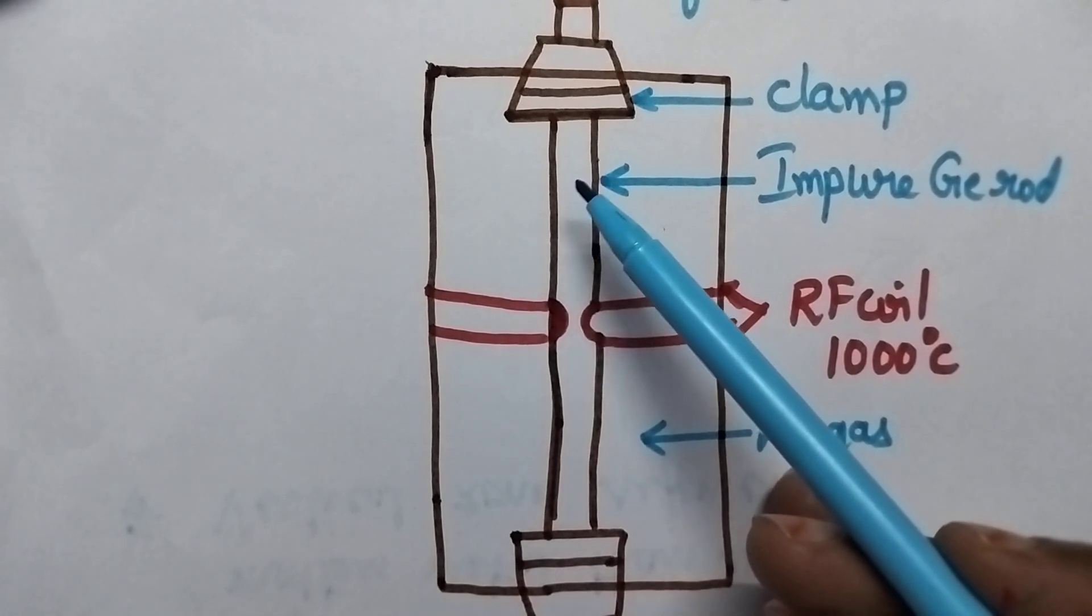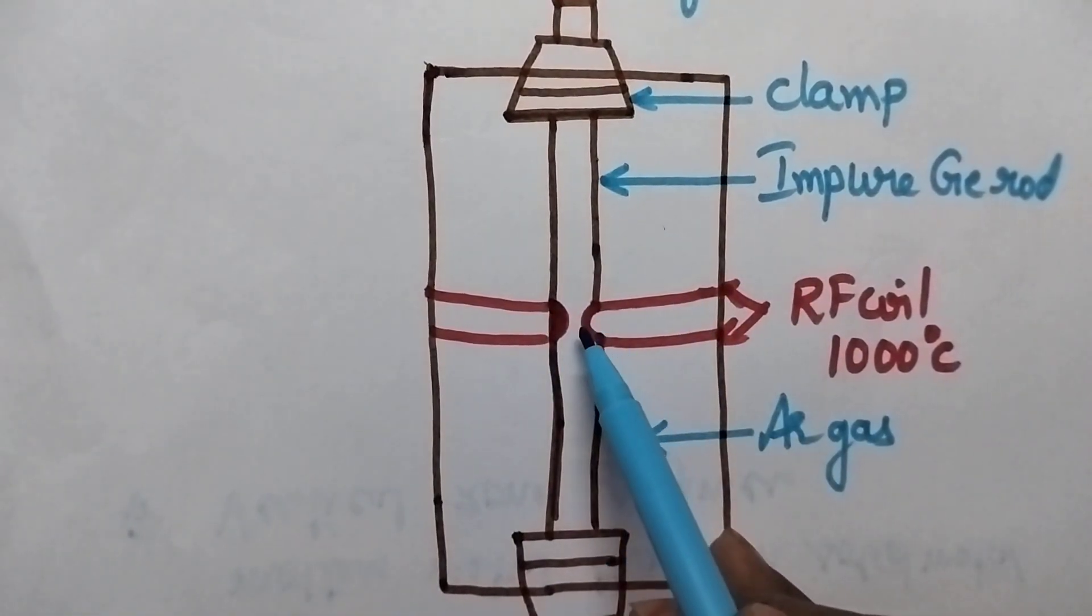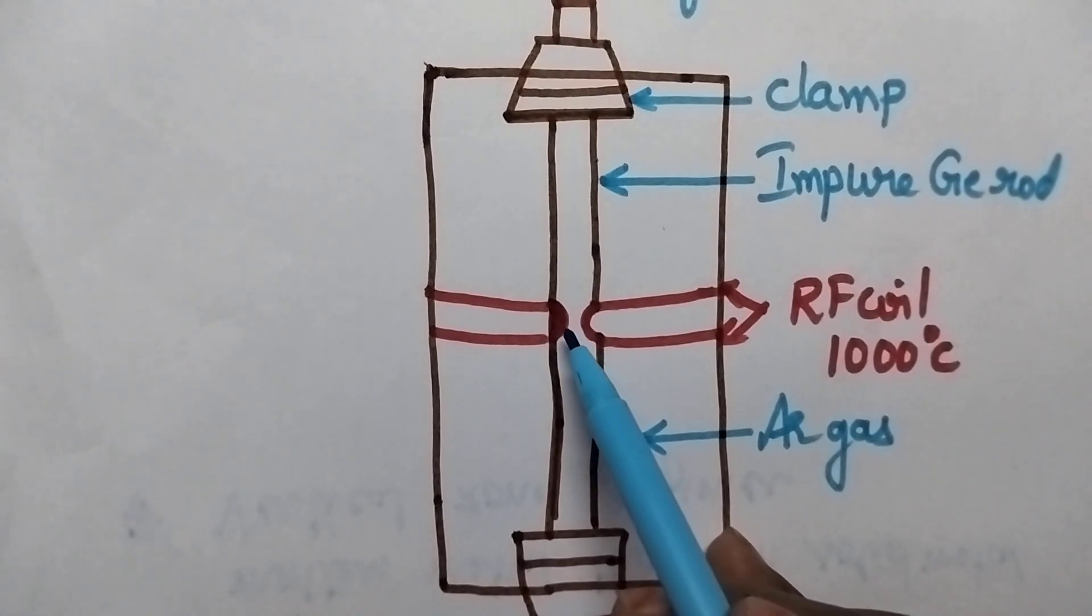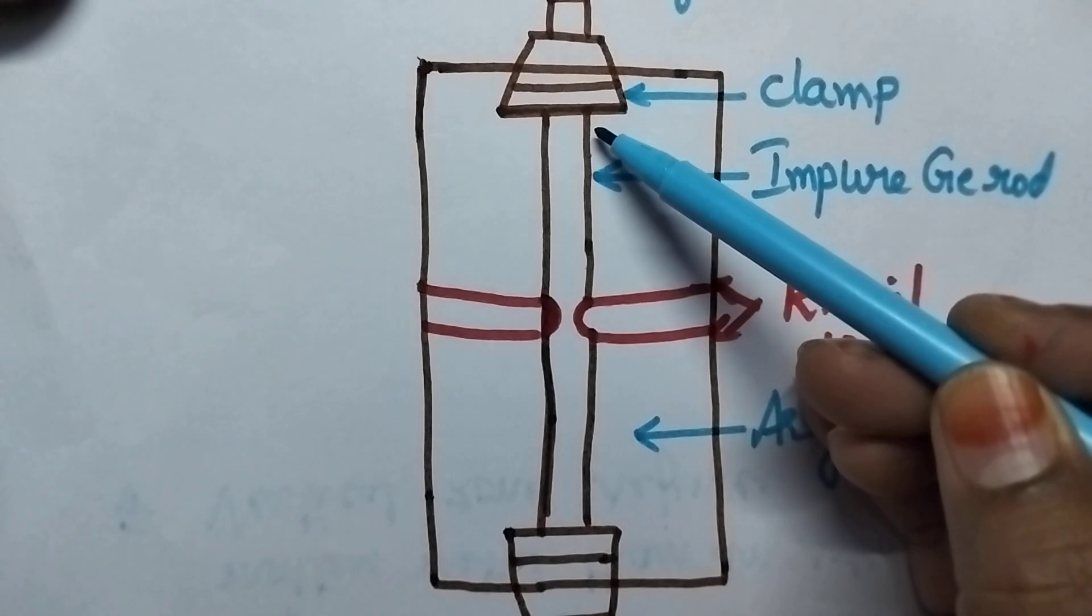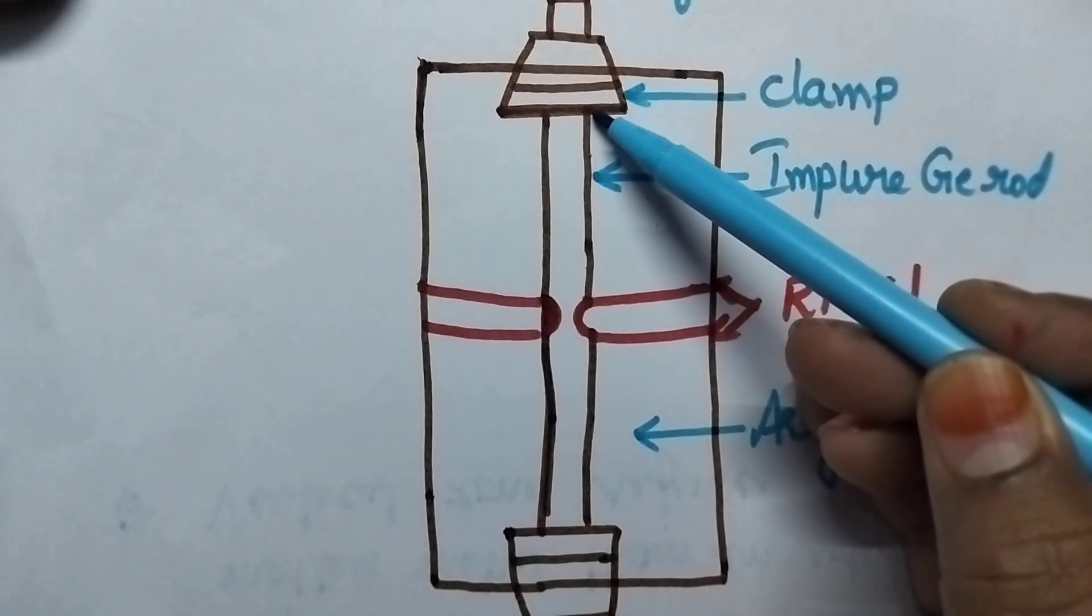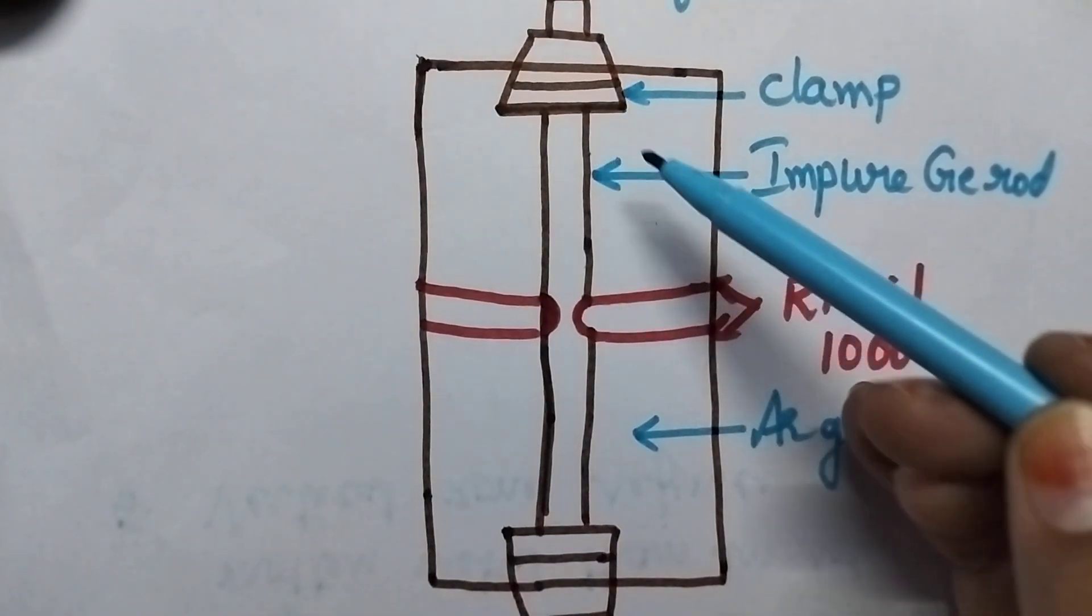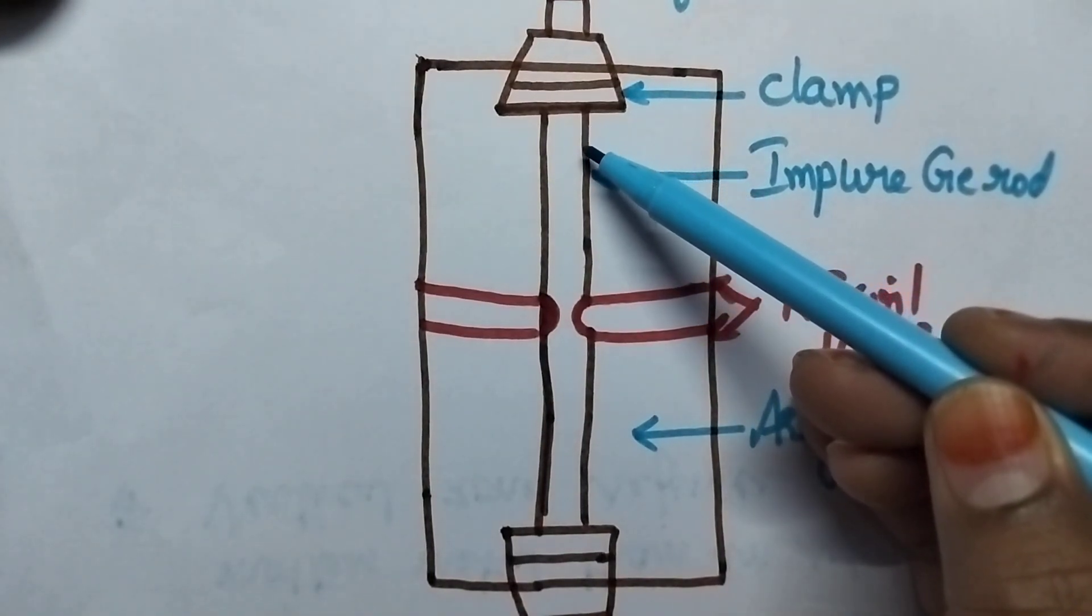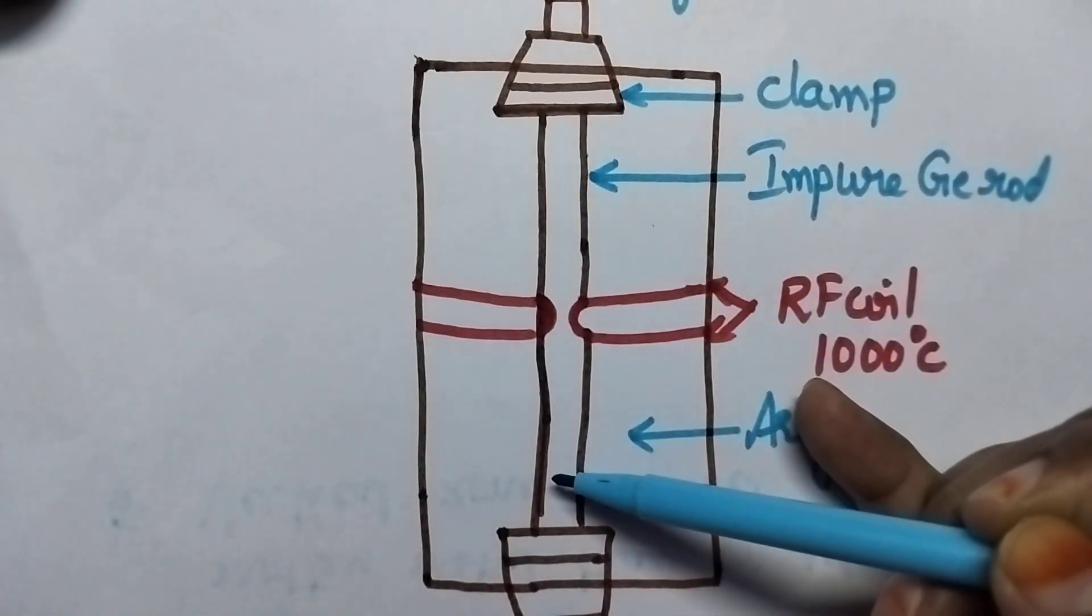Molten metal means liquid metal. Here at the RF coil, the metal is present in the liquid state. So whenever this RF coil is slowly moved down, the impurities also slowly move down. With the help of the RF coil, slowly the impurities also move towards the bottom of the rod.